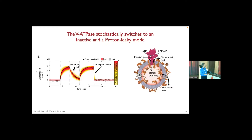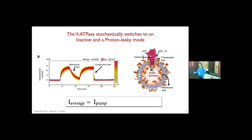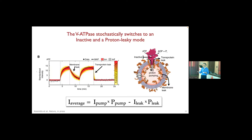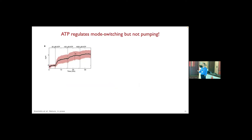So we uncover two new modes: an inactive mode where the VATPase is not working at all, and a mode where it actually becomes leaky — where the gradients it establishes are collapsing. Now, it's important to understand that if you're doing an ensemble average experiment, the ensemble average current you're recording does not reflect the actual current the molecule is working with. You have to normalize for the probability to find the molecule in an active state, and also subtract the currents that are leaking out. Ensemble average measurements of function — the canonical way to study these molecules — are actually convoluting a number of stochastic processes and effects.